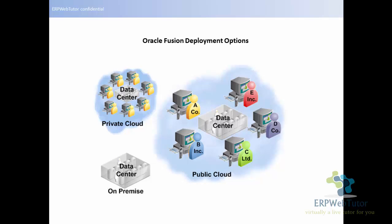The next image on the left-hand side is the private cloud option. As you can see, you have a data center and individuals accessing the data from it — we will cover that in detail. The third option is the on-premise option, where you have the software and hardware installed on-premise at the client location. Let's proceed with the next slides and talk in a bit more detail about each of these options.